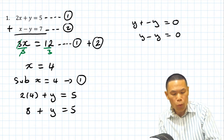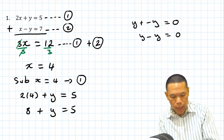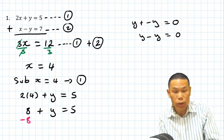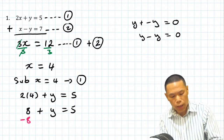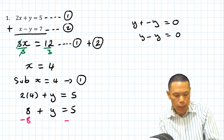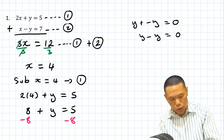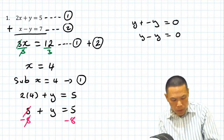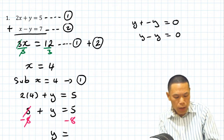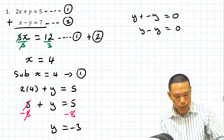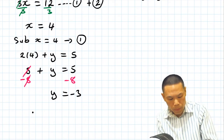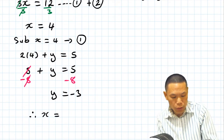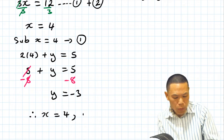To solve for y, we get rid of the 8 by doing the opposite — minus 8 on both sides. This cancels out. Therefore, y is equal to 5 minus 8, which is negative 3. So therefore x is equal to 4 and y is equal to negative 3.